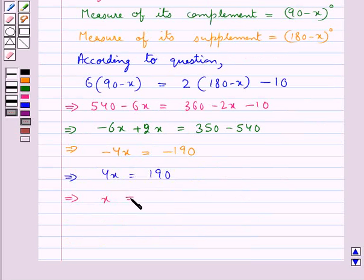From here we get the value of x by dividing both sides by 4. So we get x is equal to 190 by 4, and this gives us x is equal to 47.5 degrees.